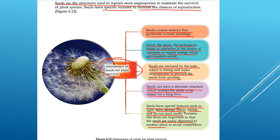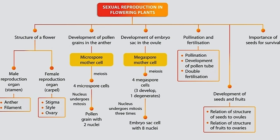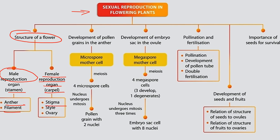That's all for Chapter 6: Sexual Reproduction in Flowering Plants. We have learned about the structure of a flower — the male reproductive organ called the stamen and the female reproductive organ called the carpel. The stamen consists of the anther and filament; the carpel consists of the stigma, style, and ovary. We also covered the development of pollen grains in the anther.